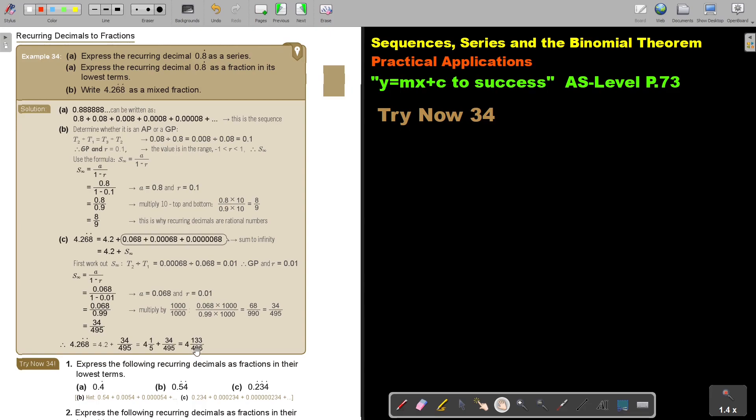And I can test it. Press it on your calculator. Say 133 divide 495 equals plus 4 and see if you get that recurring decimal.